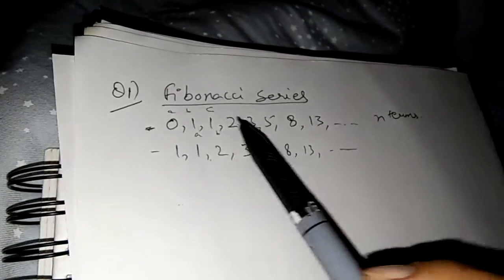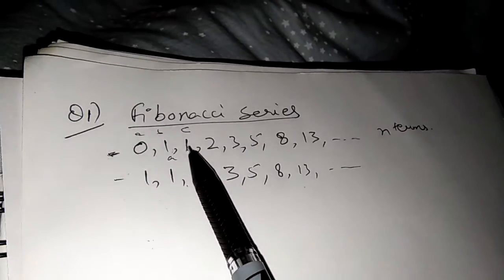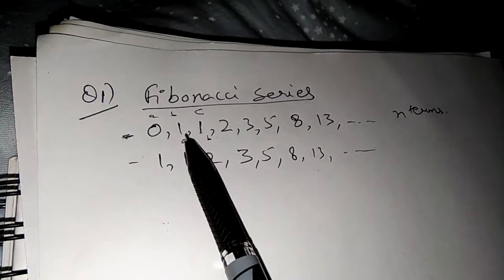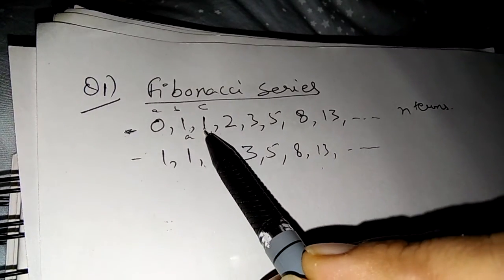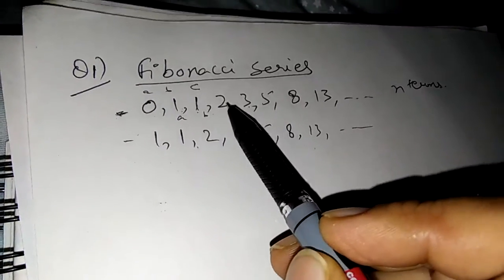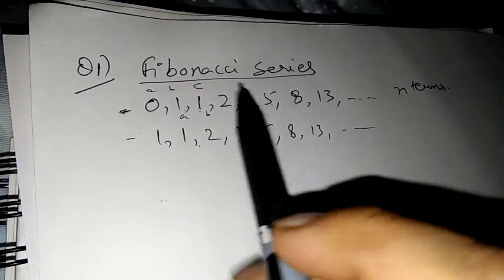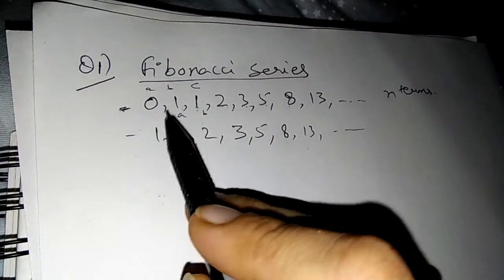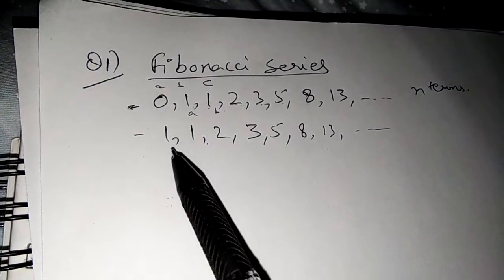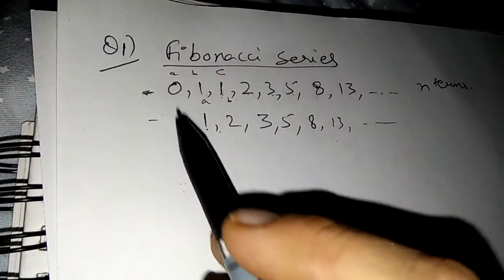What is Fibonacci series all about? Fibonacci series means the third number will be the sum of the previous two. Suppose the first two are 0 and 1 — the sum of 0 and 1 will be 1, and again the sum of 1 and 1 will be 2, again 1 and 2 will be 3, sum of 2 and 3 will be 5, sum of 3 and 5 will be 8, and so on. So the third term is the sum of the earlier two digits. It can start with 0 and 1 or with 1 and 1 — those are two different types of Fibonacci series.